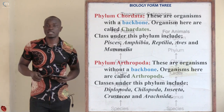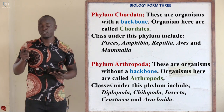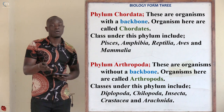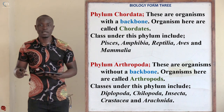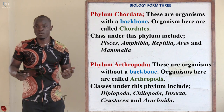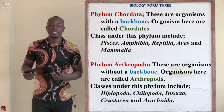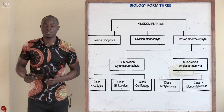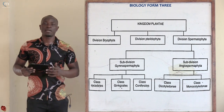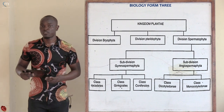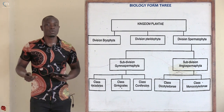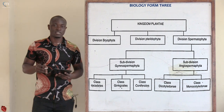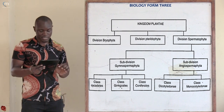For division in classification, we have division Bryophyta, Pteridophyta, and Spermatophyta, which comprises monocots and dicots. Don't forget that — if you missed that class, check the previous videos where classification was covered in detail.